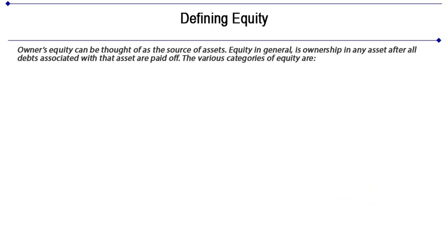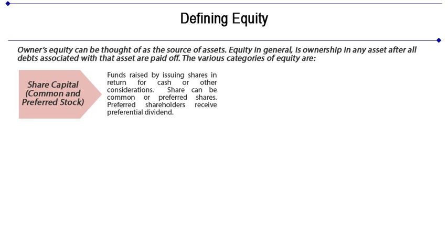Equity for a corporation is in the form of a share, also commonly known as stock. The equity account sees the following transactions. Share capital is a fund raised by issuing shares in return for cash or other considerations. Shares can be common or preferred. Preferred shareholders receive preferential dividends. Shareholders are the last to receive interest or dividend — that is, they receive the share of profits after all the liabilities are paid off.